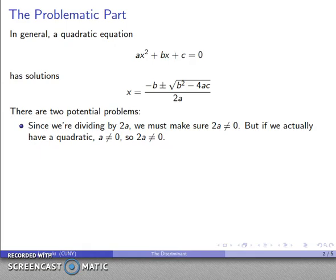This is only going to occur if a is equal to 0. And if we actually have a quadratic, if we actually have a square term, that means a is not 0, which means that we don't really have to worry about this. 2a is not going to be 0.